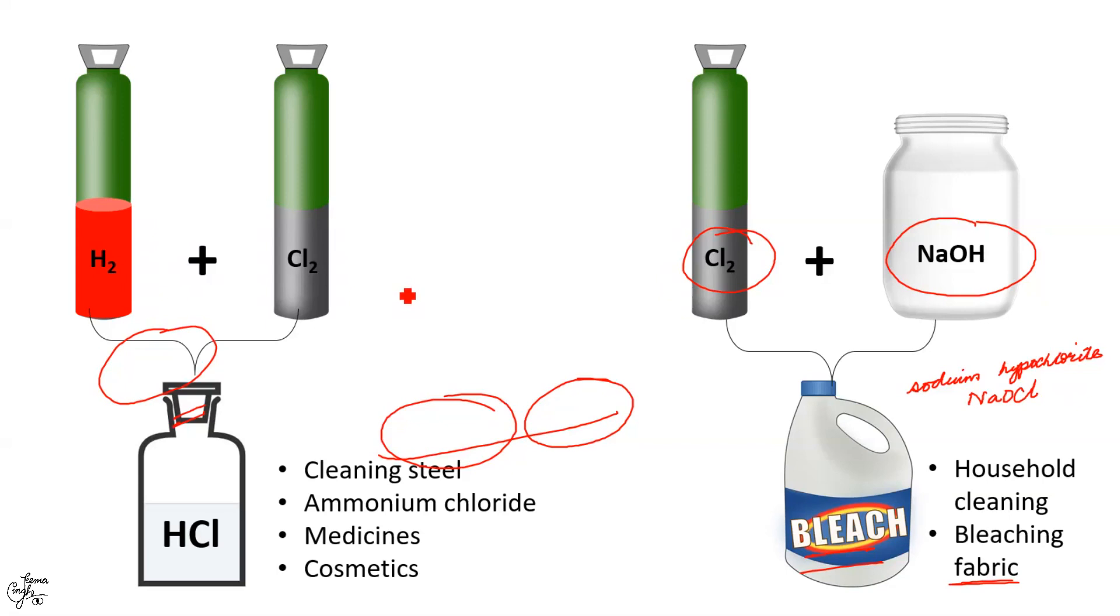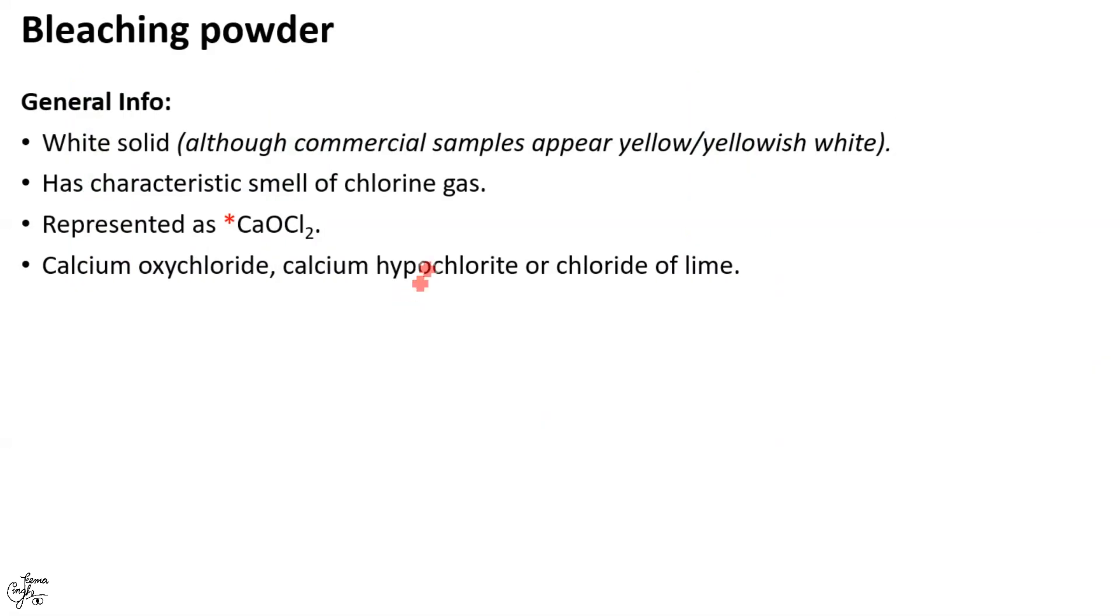Moving on to the next chemical compound that is obtained from common salt, the bleaching powder. It is a white solid although commercial samples may appear yellow or yellowish white in color. It has a strong characteristic smell of chlorine gas and is represented as CaOCl2.